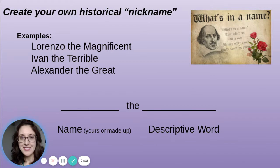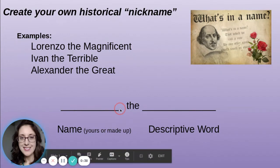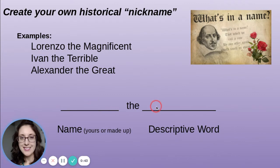Before we started with today's class, we created our own historical nickname. A lot of times historians give famous leaders a descriptor word that kind of sums up their leadership style — for example, Lorenzo the Magnificent, Ivan the Terrible, or Alexander the Great. Students had the opportunity to put their name or a made-up name with some type of descriptor word, like Miss Hughes the Mightiest.